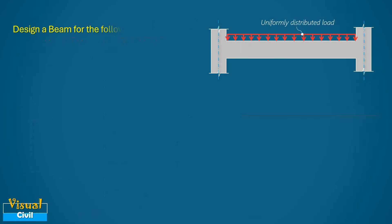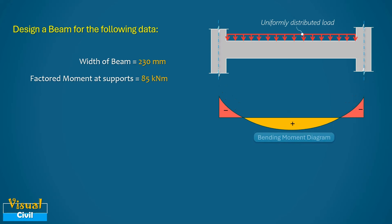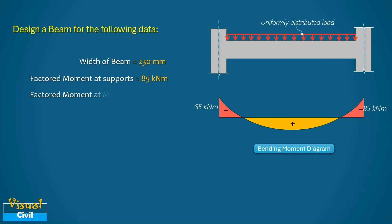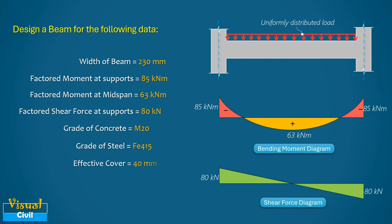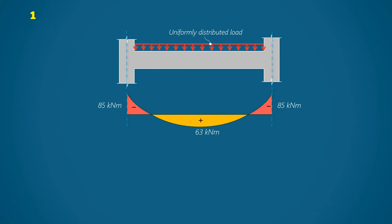In this video we will design a concrete beam with a width of 230 mm. The factored moment at the supports is 85 kilo-newton meter and at the mid span is 63 kilo-newton meter. The factored shear force at the support is 80 kilo-newton. The concrete grade is M20, the steel grade is Fe415, and we assume an effective cover to the reinforcement equal to 40 mm.